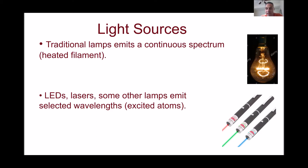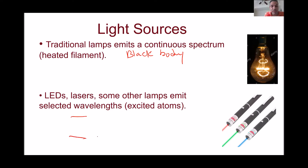For a traditional lamp, it's a heated filament type of emission, equivalent to black body radiation. When you heat any object to higher temperatures, it emits a continuous spectrum with all frequencies. On the other hand, LEDs and lasers emit selected wavelengths with specific colors because they are based on excitations within the energy levels of the atoms in the device, not the overall bulk sample.